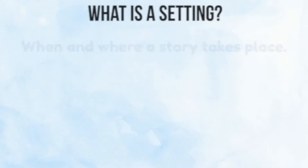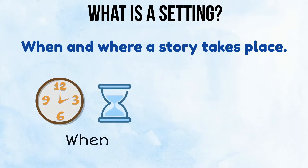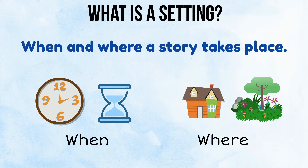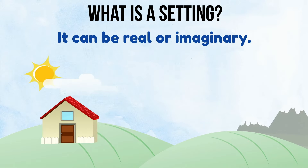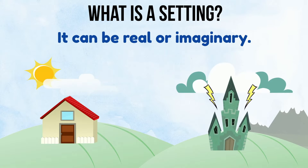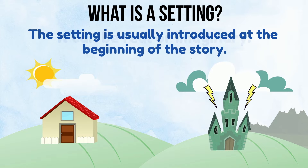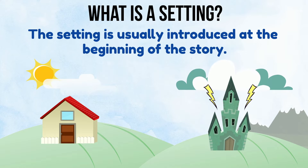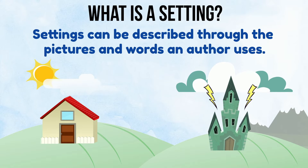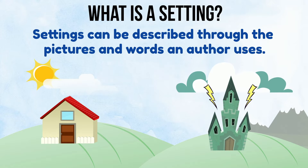The setting is when and where a story takes place. It can be real or imaginary. The setting is usually introduced at the beginning of the story. In a story, settings can be described through the pictures and words an author uses.